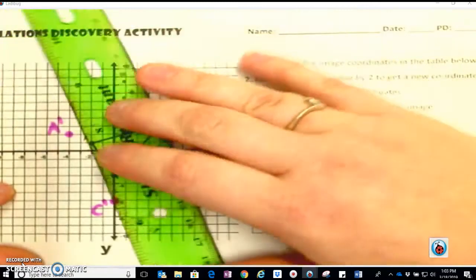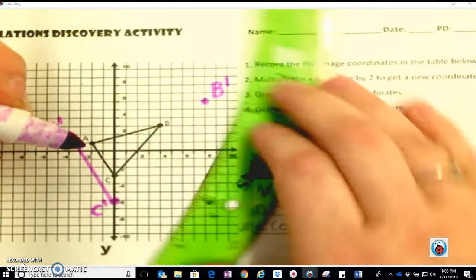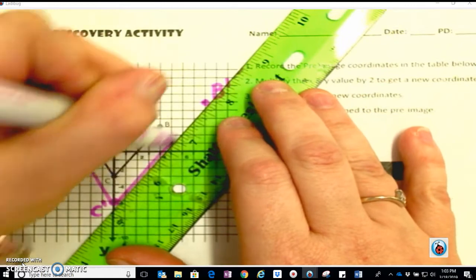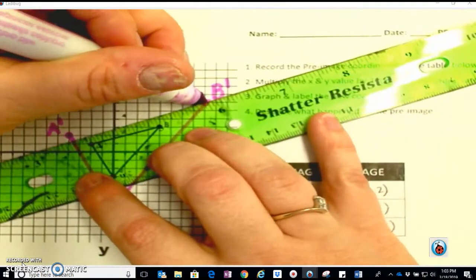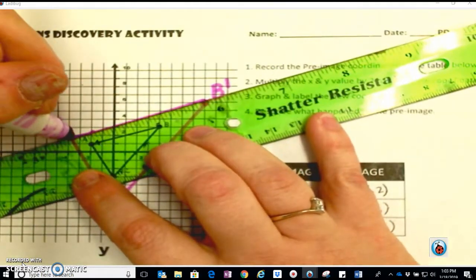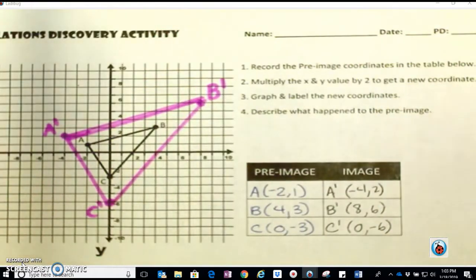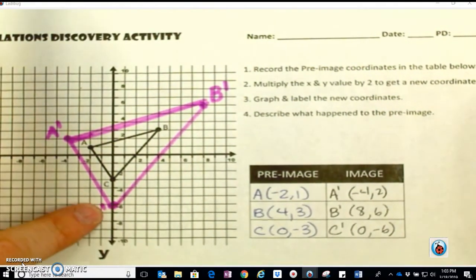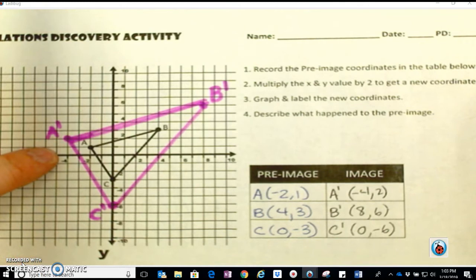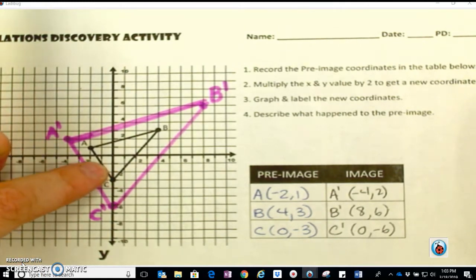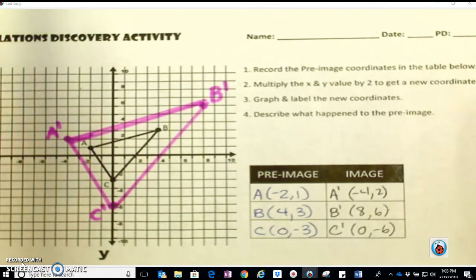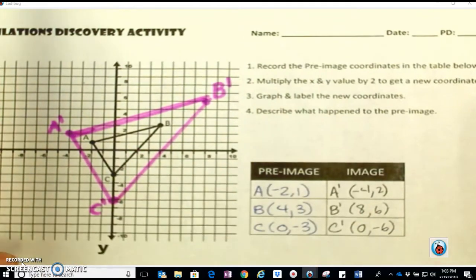I will use my ruler for precision. Not very precise there, Ms. P. So you can see the pink is my new image, and the black one was the pre-image. This says describe what happened to the pre-image.